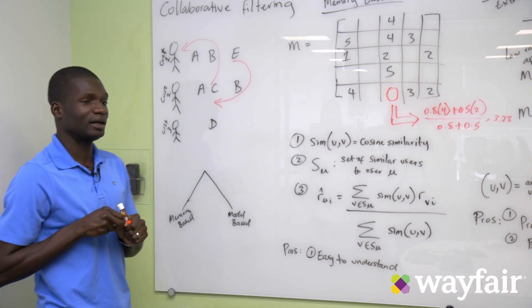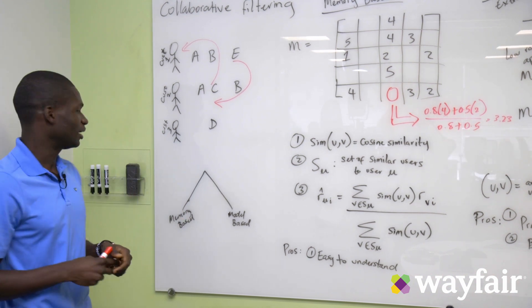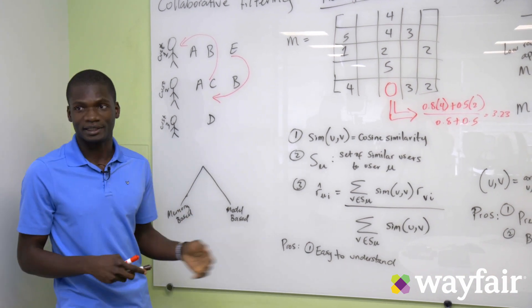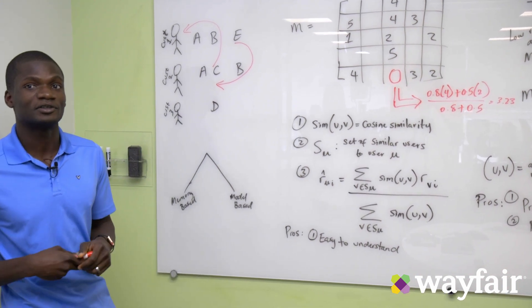In practice, collaborative filtering is broken down into two main umbrellas: memory-based and model-based. And today I am going to give an example about each of these different approaches.